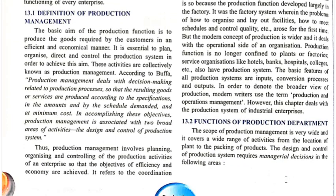The basic aim of the production function is to produce the goods required by customers in an efficient and economical manner. We should not waste raw material, and it should also not be too costly. It is essential to plan, organize, direct, and control the production system in order to achieve this aim. These activities are collectively known as production management.